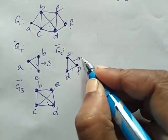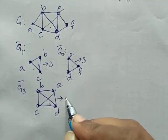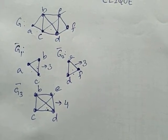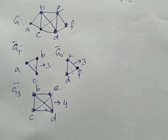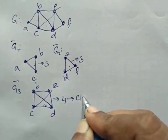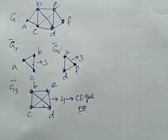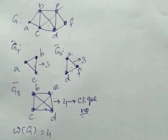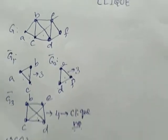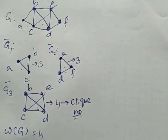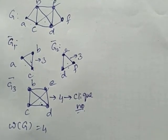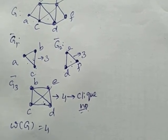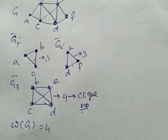The order of G1 is 3, the order of G2 is also 3, but the order of G3 is 4. The order of the largest clique in a graph is known as the clique number, denoted by ω(G). So a clique is a complete subgraph of a given graph G, and the clique number is the largest order of a clique, denoted by ω(G).